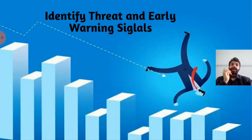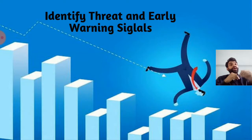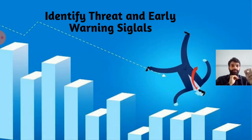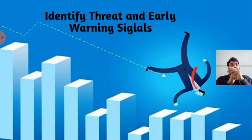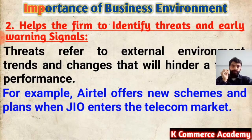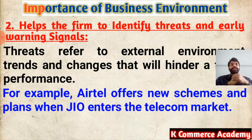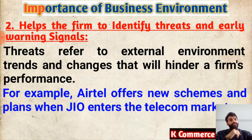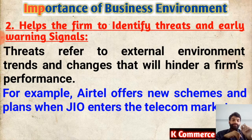The second point is identifying threats and early warning signals. Business environment not only tells us about opportunities but also about threats — what challenges are there in the market, what things we need to be careful of, whether demand for our product is going to decrease in the near future, or whether there is a coming change in technology. The businessman who identifies these threats first can make safeguard arrangements, and with timely safeguarding, the business can continue and even grow.